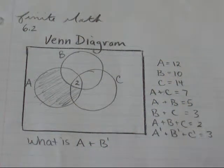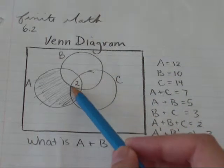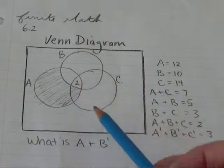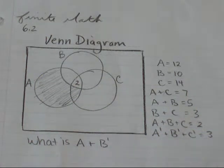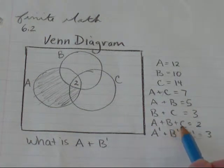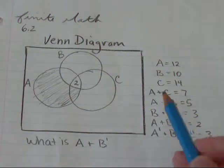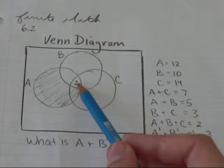The first thing you always want to do, if you're given what the center part equals, always write that in first. I have a video on what to do if the center is the unknown, but in this video I'm lucky. It tells me A and B and C, or where all of them occur, is equal to 2. So I've written that 2 in.